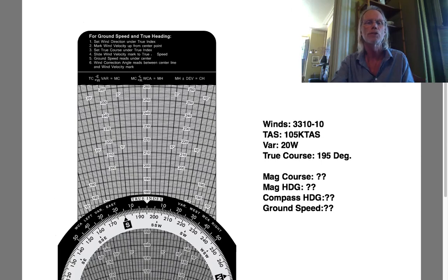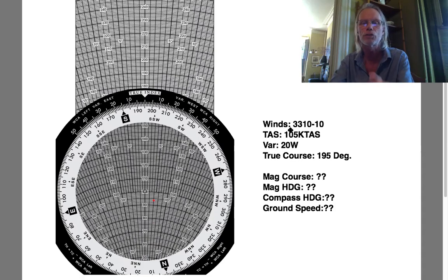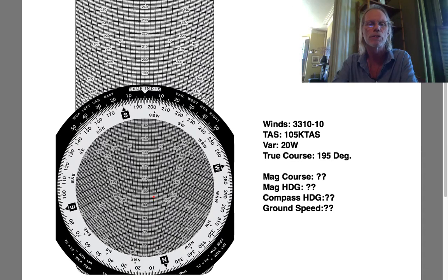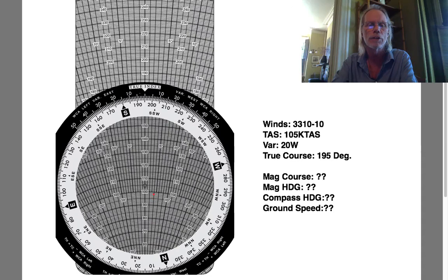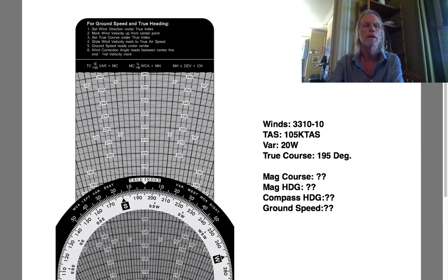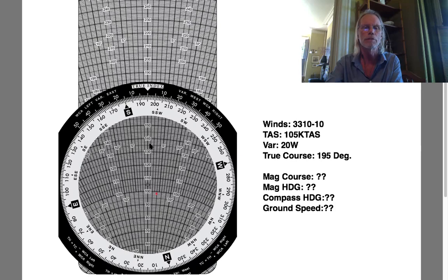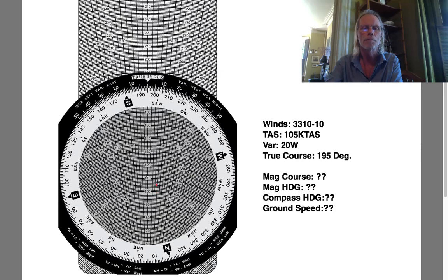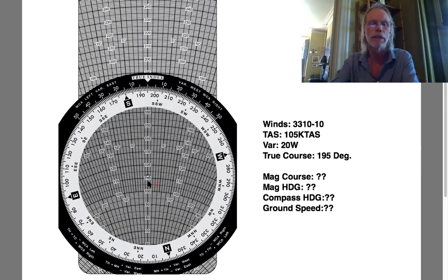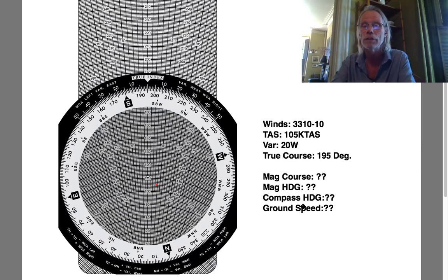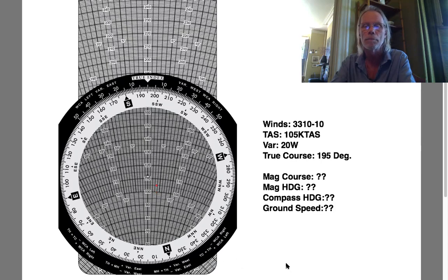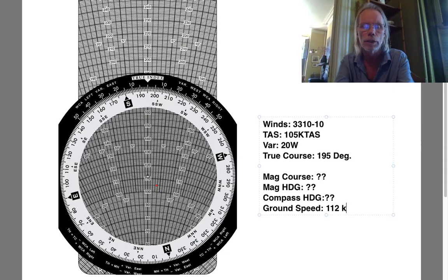Set true course under true index — done. Slide wind velocity mark to true airspeed. The wind velocity mark is the little red mark we made. We need to slide it up to the true airspeed the aircraft will fly during this cross country, and that's 105. So I'm moving that center dot up halfway between 100 and 110 to 105. I want to put the true airspeed mark on 105, not the center dot. Now the center dot reads our actual ground speed, which is 112. You can see 110, 111, 112. So we have an answer — 112 knots ground speed.